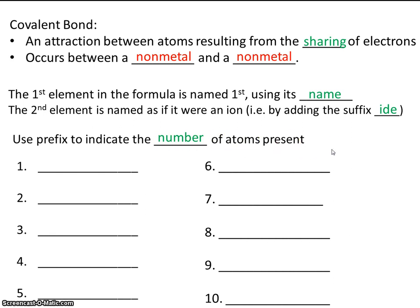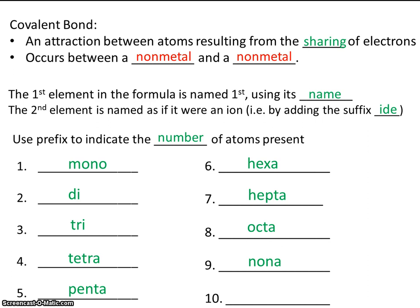You're probably already familiar with these prefixes. The prefix for one is mono, two is di, three is tri, four is tetra, five is penta, six is hexa, seven is hepta, eight is octa, nine is nona, and ten is deca. I don't necessarily know any tricks for memorizing these — you just have to buckle down and do it. Make sure you memorize these prefixes.